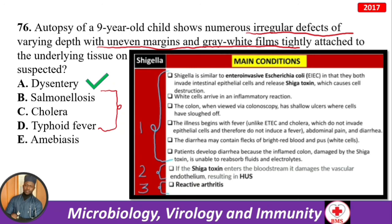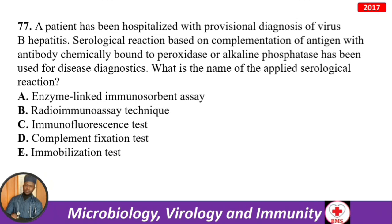A patient hospitalized with provisional diagnosis of viral hepatitis B — when you see peroxidase or alkaline phosphatase in the question, the answer is enzyme-linked immunosorbent assay (ELISA).